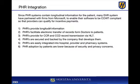Since PHR systems contain longitudinal information, many EHR systems have partnered with places like Microsoft to enable their software to be CCHIT compliant. CCHIT requires that patients be able to see their information. One way EHRs went about this without redeveloping everything was to partner with Microsoft Health Vault — all they had to do was integrate, and the front end was already available. PHRs provide this longitudinal information, facilitate electronic transfer of records from doctors to patients, and provide for CCR and CCD record transmission via HL7. They are secured and backed by the company that develops them, and are easily integrated into hospital, provider, and pharmacy systems.